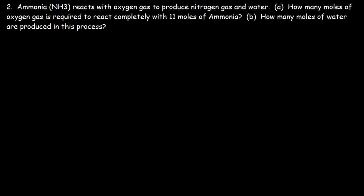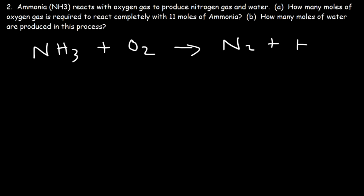Here is another problem. Ammonia, NH₃, reacts with oxygen gas to produce nitrogen gas and water. The question for part A is: how many moles of oxygen gas is required to react completely with 11 moles of ammonia? Let's write the reaction first: NH₃ reacts with O₂ to produce N₂, which is diatomic, and H₂O.